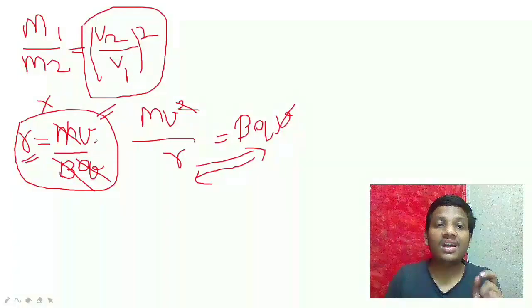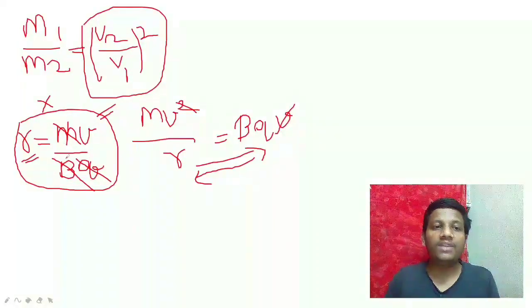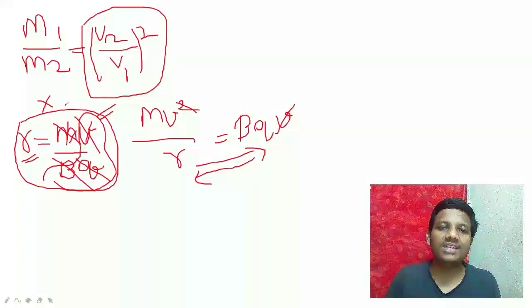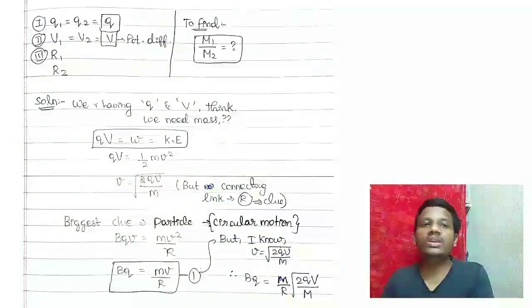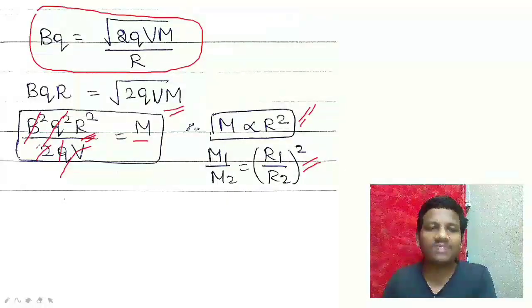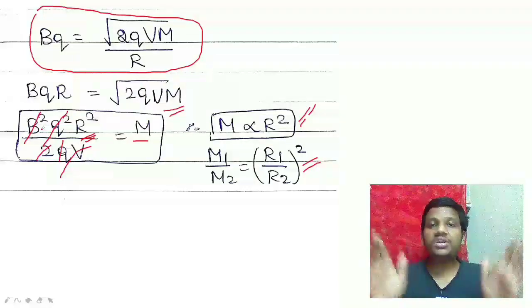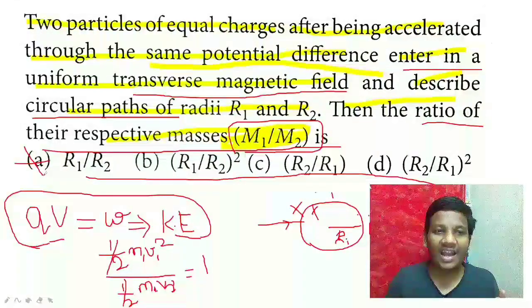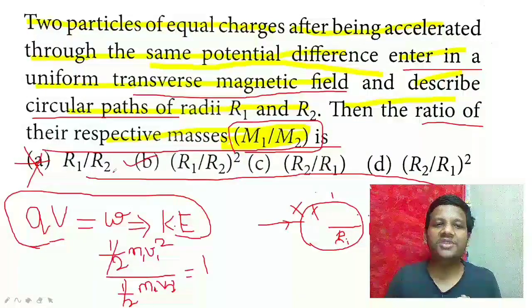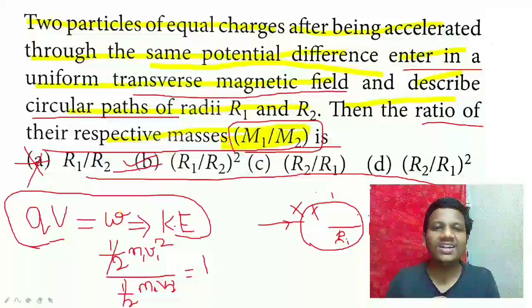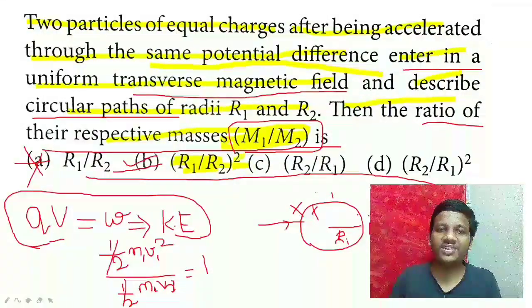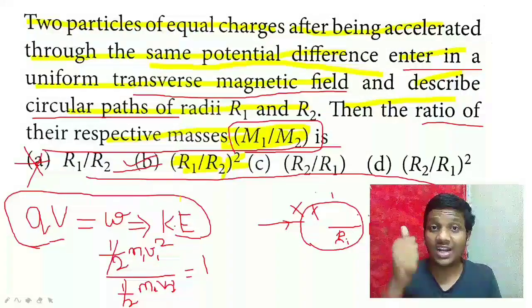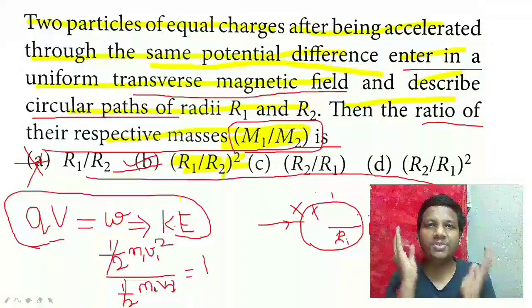This is how you calculate this question, which is very beautiful. Most NEET aspirants commit a mistake and select option A, but that is incorrect. You should select option B, which is the correct option: R1 by R2 the whole squared. Try to learn every concept of physics with understanding, which will help you learn everything.